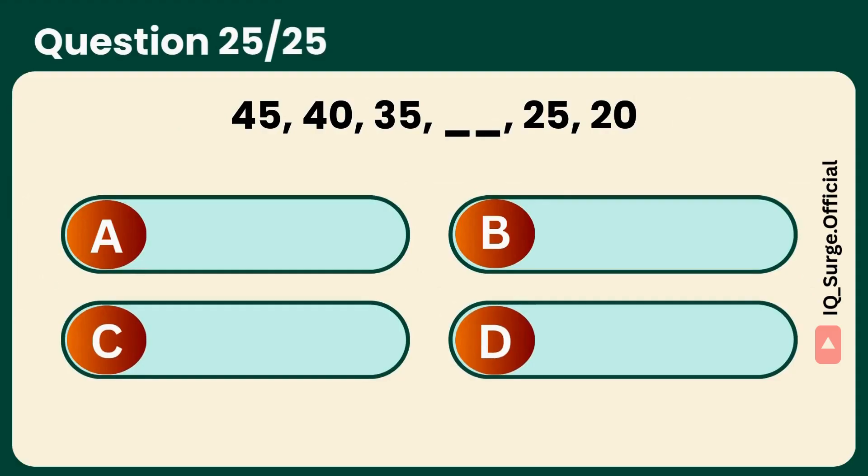Counting down by fives. What's the blank? Correct. It's thirty. Smooth finish.